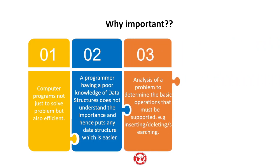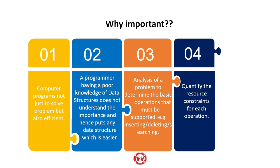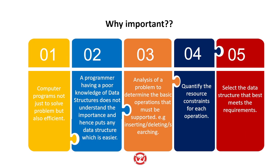Analysis of a problem involves determining the basic operations that might be supported — that is insertion, deletion, and searching. We should write a data structure so we can insert, delete, and search efficiently. We should quantify the resource constraints for each operation. For example, if I have space to store only three variables, I cannot include a fourth because I do not have space. We then select the data structure that best meets the requirements based on all the strategies we apply.